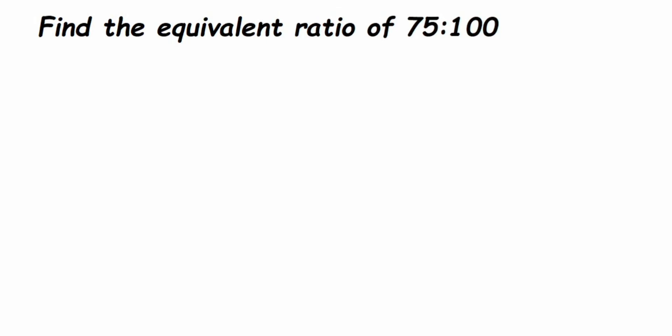Here's a question from the ratio and proportion chapter: find the equivalent ratio of 75 to 100. We know that equivalent ratios or equivalent fractions can be found by multiplying or dividing the numerator and denominator by the same number. You can either multiply or divide with any number. I'm going to show one example using multiplication and one using division.